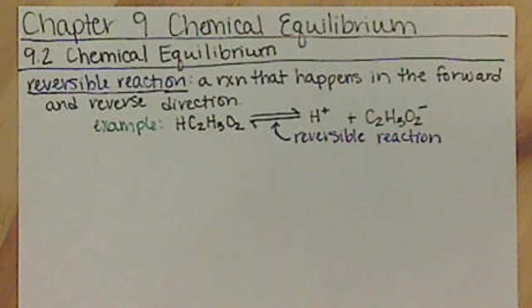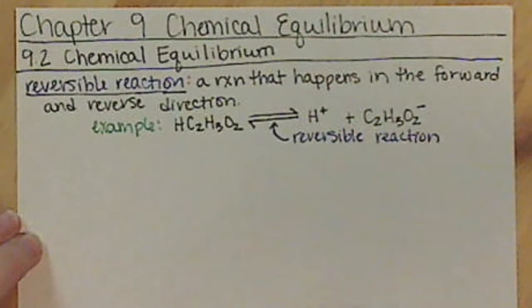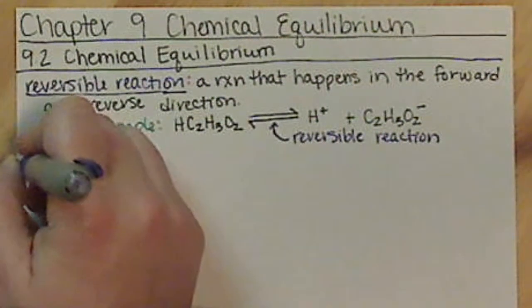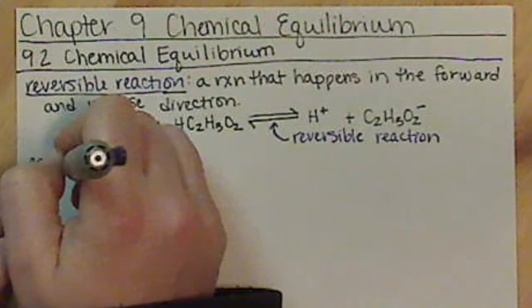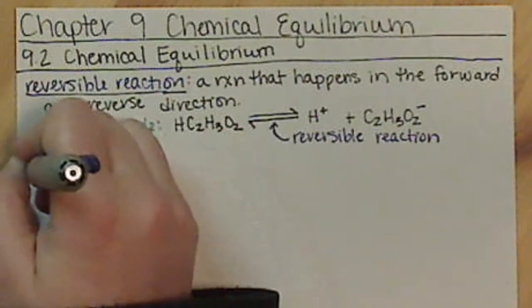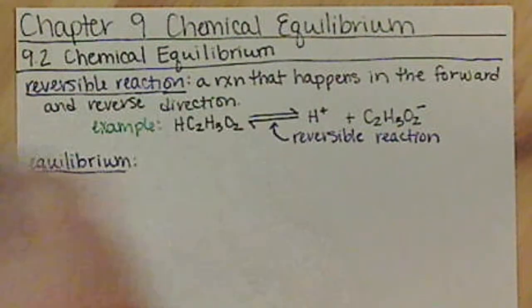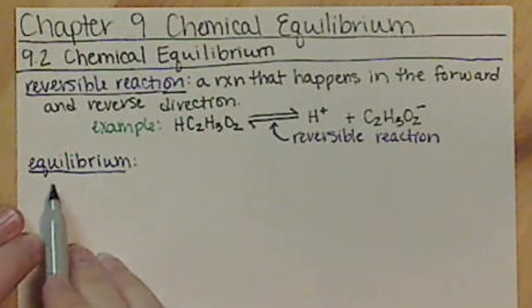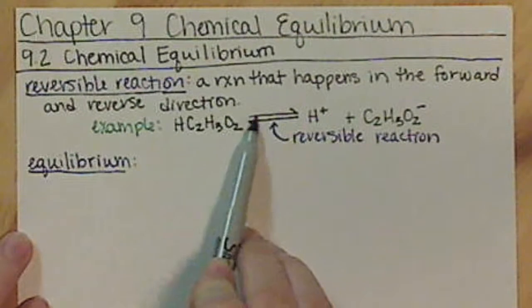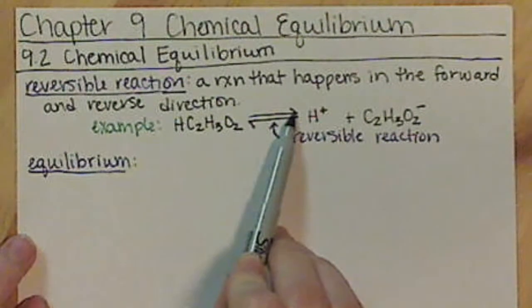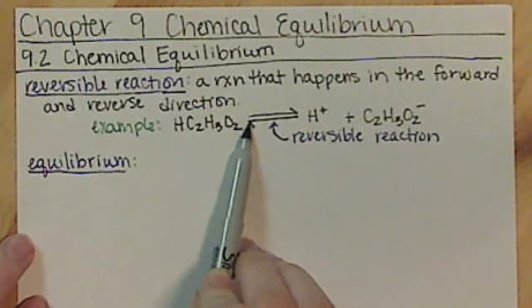When we have a reversible reaction that basically settles—so it comes to its end even though we still have reactants and products left—we call that equilibrium. Our definition of equilibrium occurs when the rate of the forward reaction, the rate at which it splits apart, is the same as the rate of it going back together.